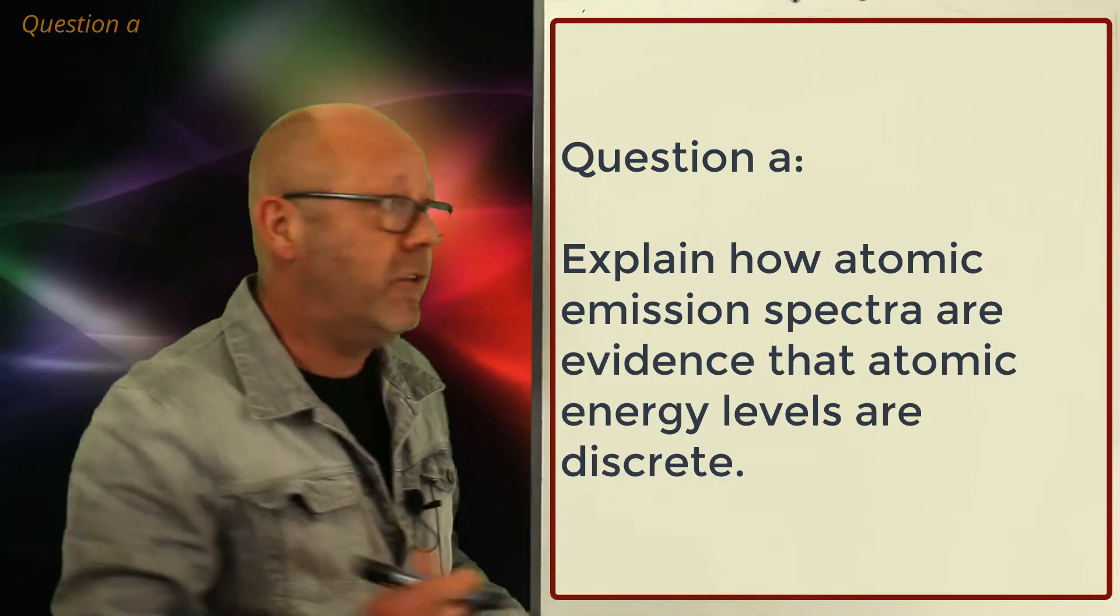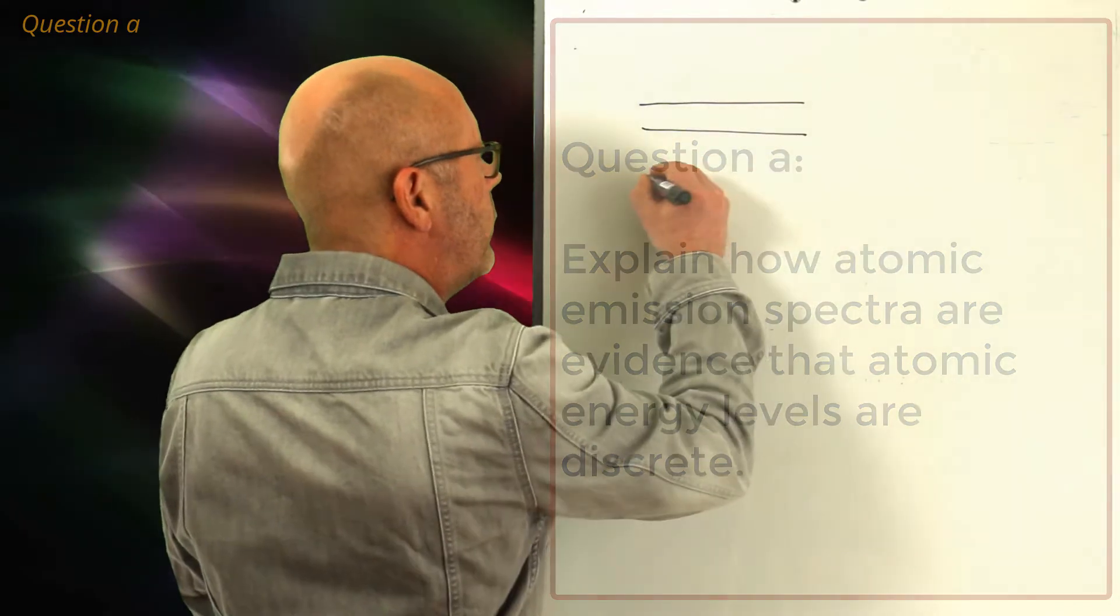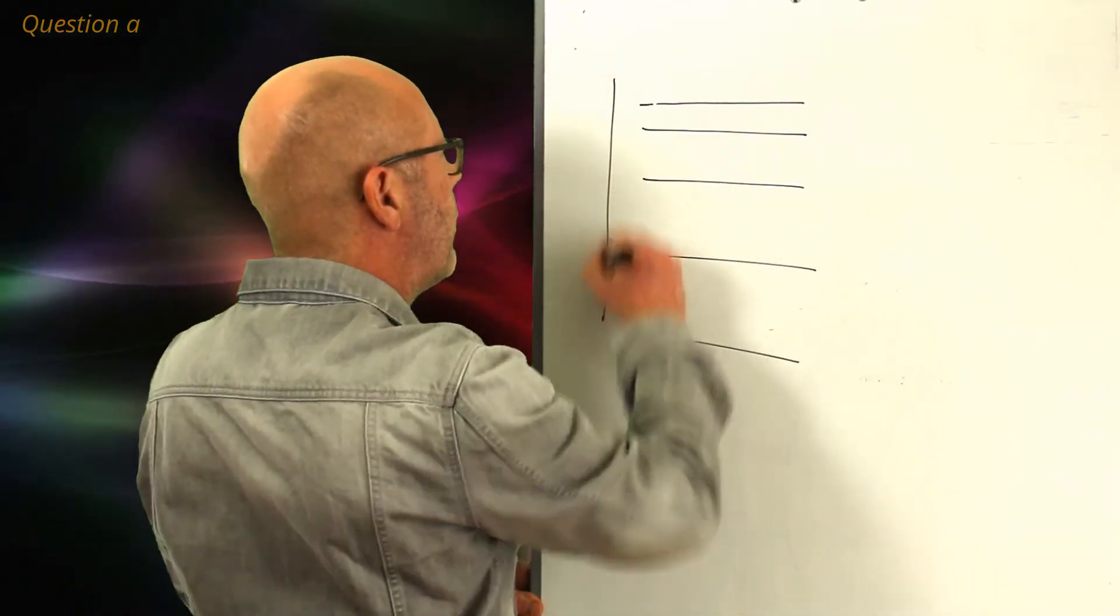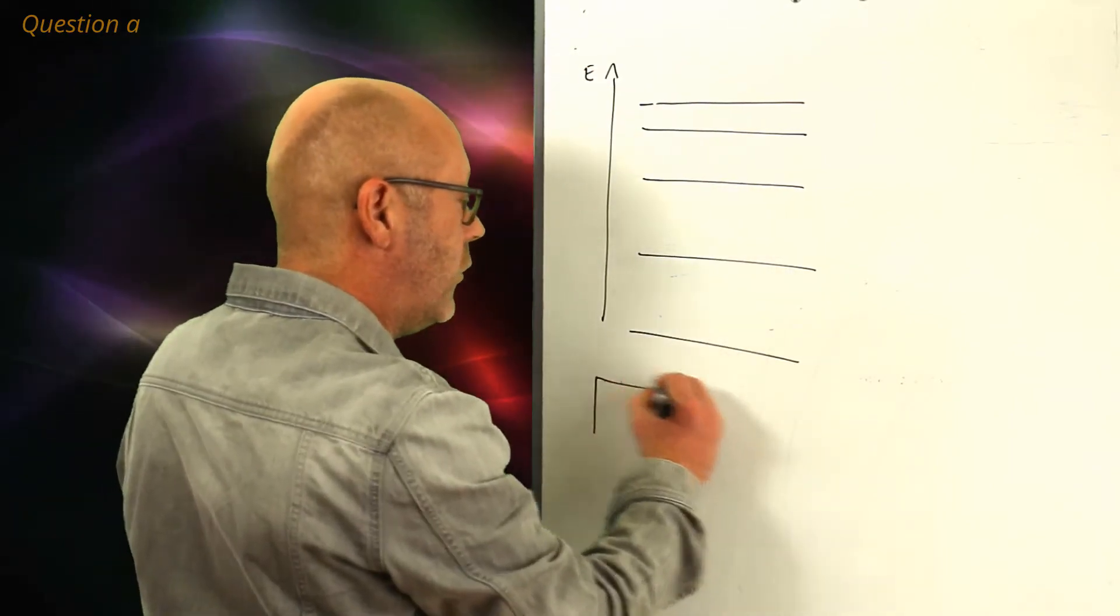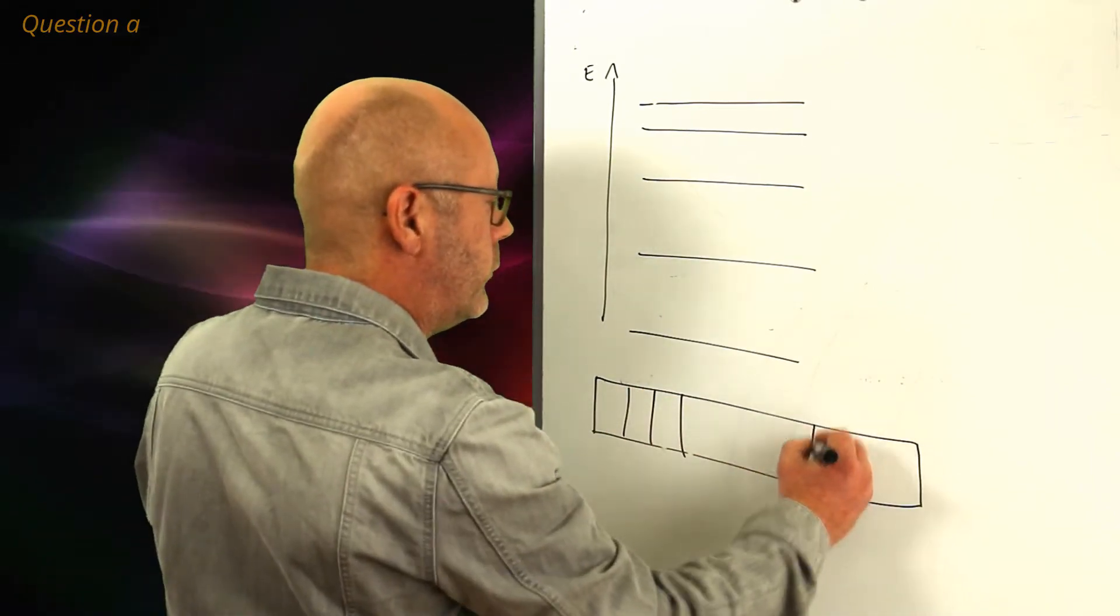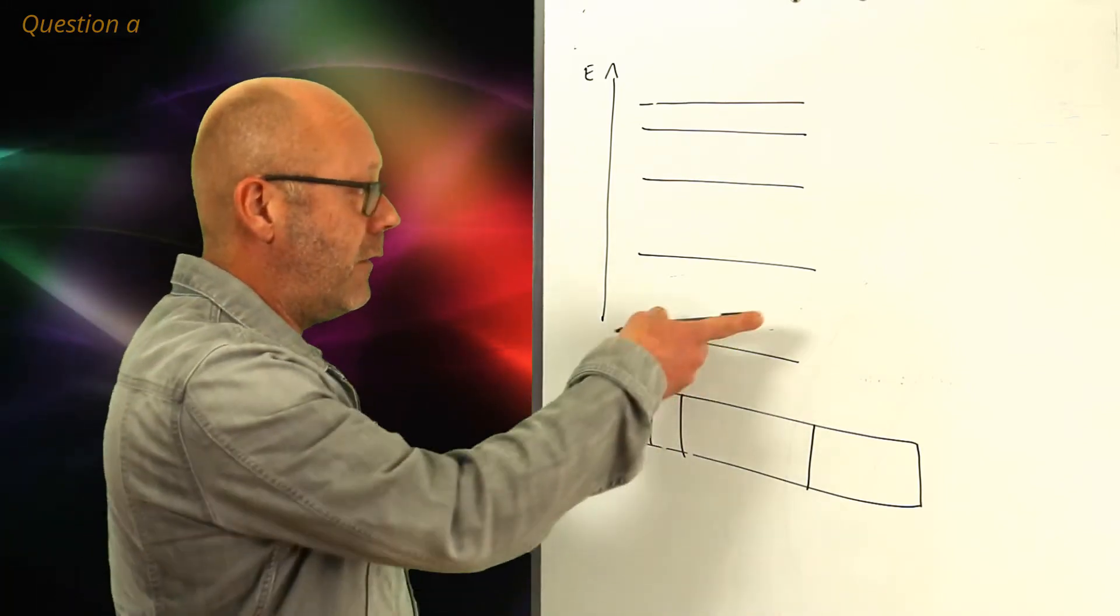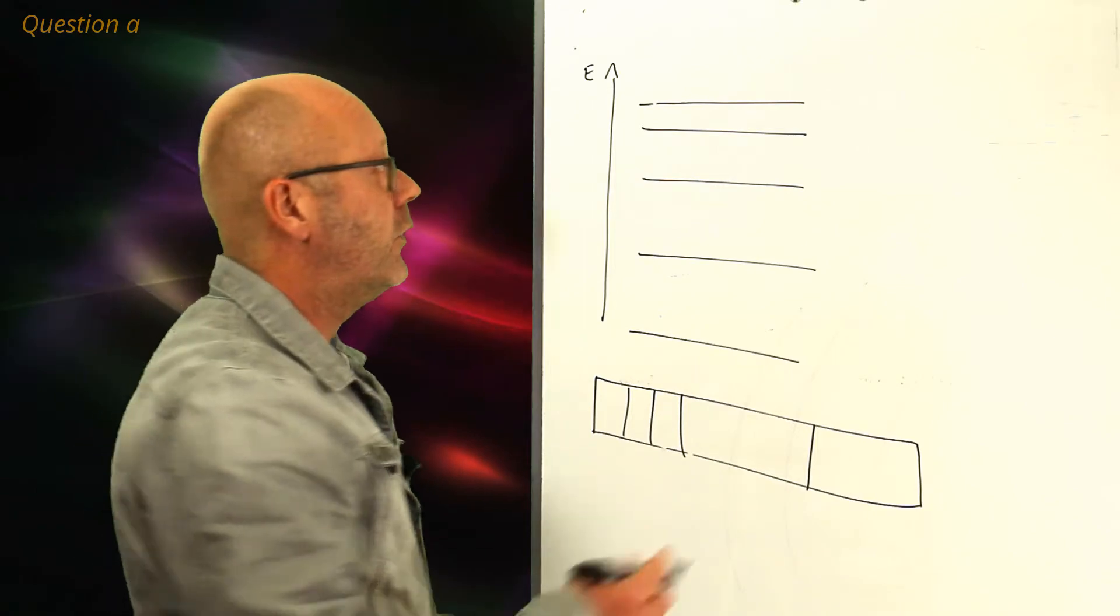Well, the examiner wishes you to connect the energy levels of an atom with the emission spectra of this atom. And by this connection, deduce that the levels are discrete. So, how do you do that?